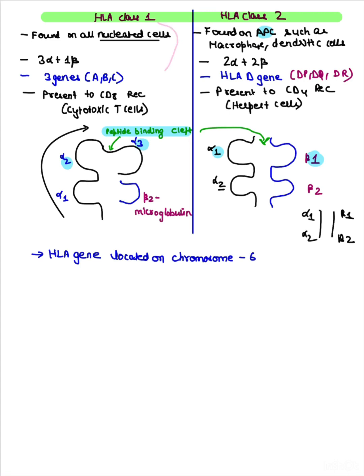HLA class 1 presents to CD8 molecules, and HLA class 2 presents to CD4 molecules. How can you remember? The multiplication comes out to be 8 both places. CD4 cells are helper T cells and CD8 cells are cytotoxic T cells.